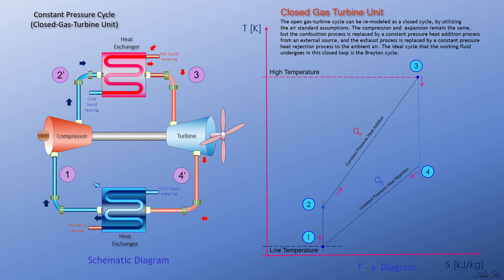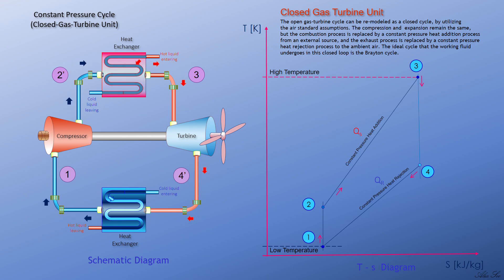In the constant pressure cycle, or closed gas turbine unit, you basically have four devices: one is the compressor, two is the heat exchanger (also called the heater), three is the turbine, and four is also a heat exchanger but we call it the cooler.